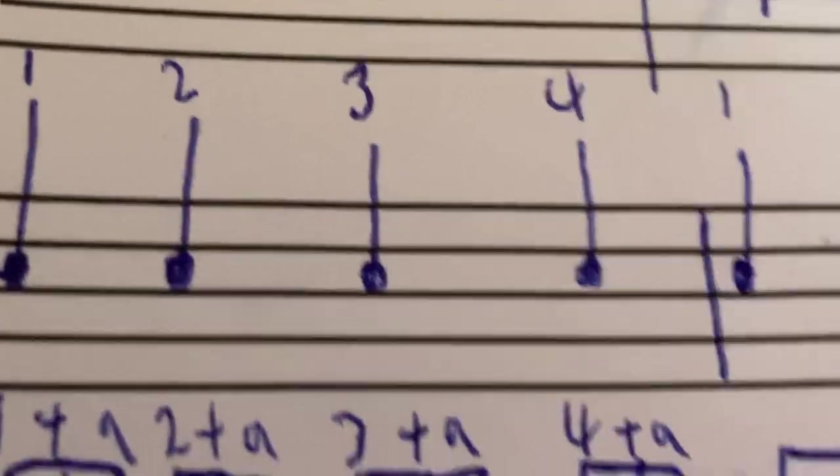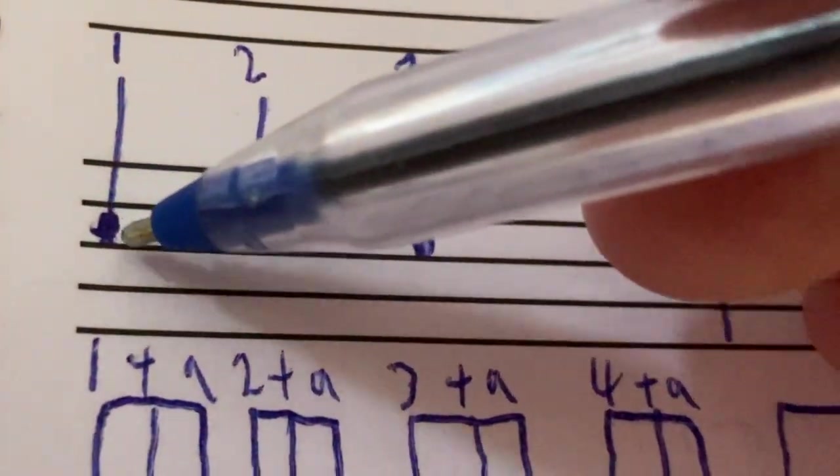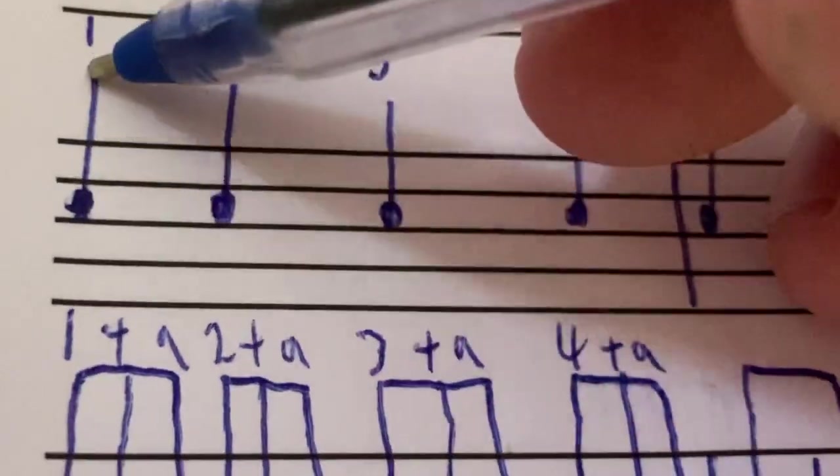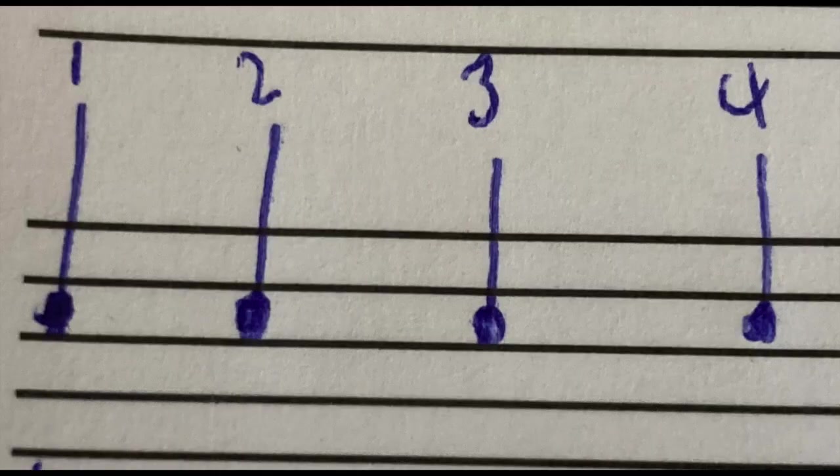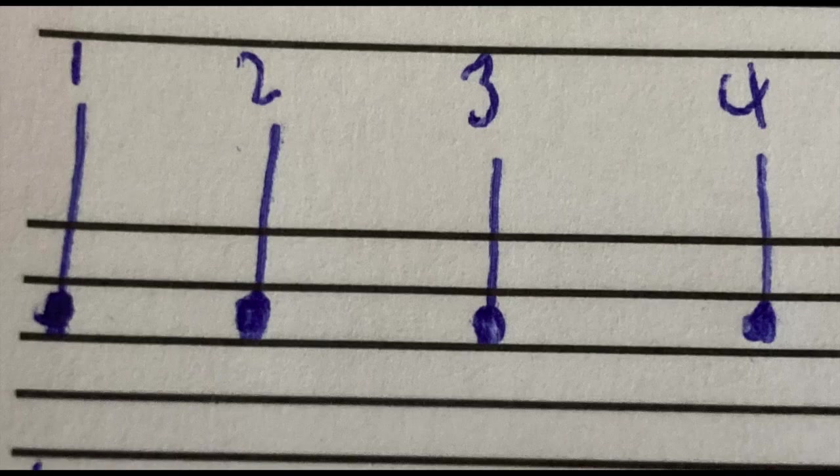Okay, so next we need to understand the subdivisions. To understand the subdivisions, we first got to look at the quarter note. So this is what a quarter note looks like - it's a filled in circle with a line that just goes straight up and down. Alright, so right here we have one measure of quarter notes. So when we think of music, we typically think of counting like 1, 2, 3, 4, 1, 2, 3, 4.